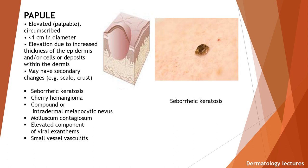What is a papule? It is an elevated, palpable, circumscribed lesion less than one centimeter in diameter, with elevation due to increased thickness of epidermis or cells or deposits within the dermis. May have secondary changes, for example scales or crust. Examples are seborrheic keratosis, cherry hemangioma, compound or intradermal melanocytic nevus, molluscum contagiosum, elevated component of viral exanthems, and small vessel vasculitis. Here you can see the example of seborrheic keratosis.